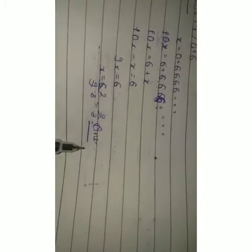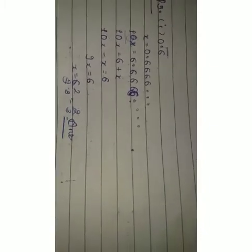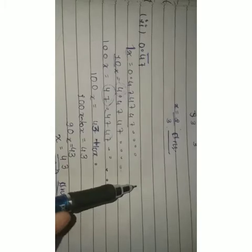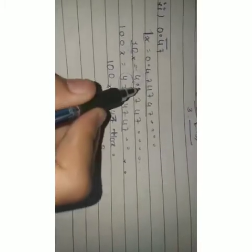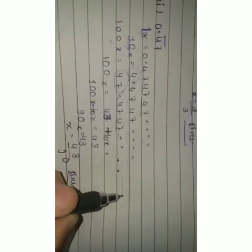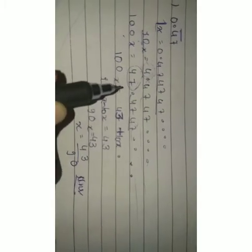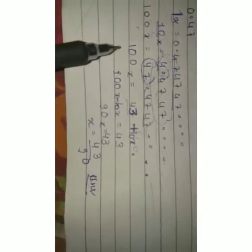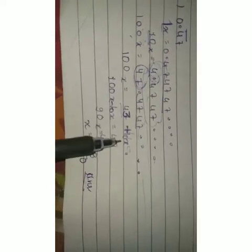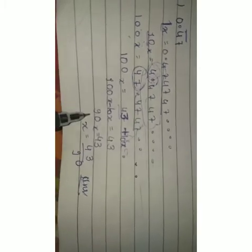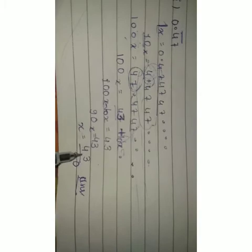For the second part, 0.4̄7̄: let x = 0.474747..., then 10x = 4.4747... and 100x = 47.4747... Now 100x − 10x = 47.4747... − 4.4747..., so 90x = 43, giving x = 43/90.